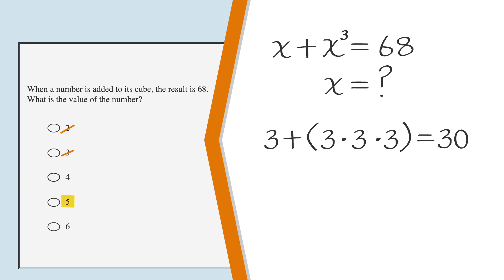Let's try the fourth answer choice, 5. 5 plus 5 cubed equals 130, which is much too large. We need to input a smaller number, so the fourth and fifth answer choices can be eliminated.